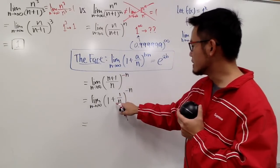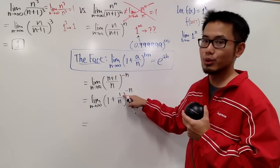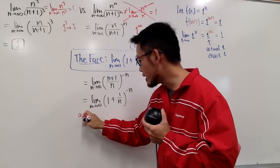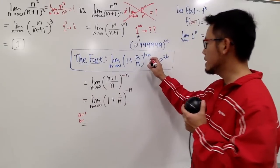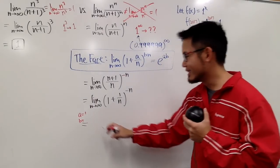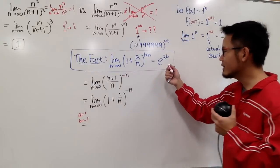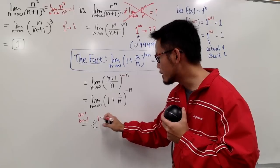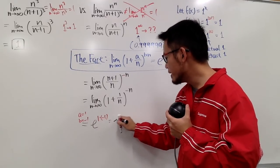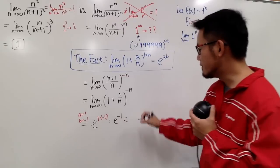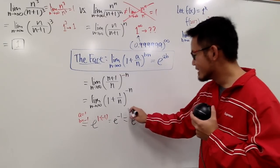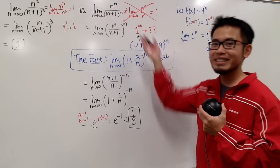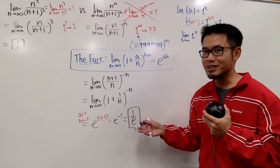With a = 1 and b = −1, the limit is e^(a × b) = e^(1 × −1) = e^(−1), which equals 1/e — approximately 0.36. So the second limit is 1/e, which is definitely not equal to 1.